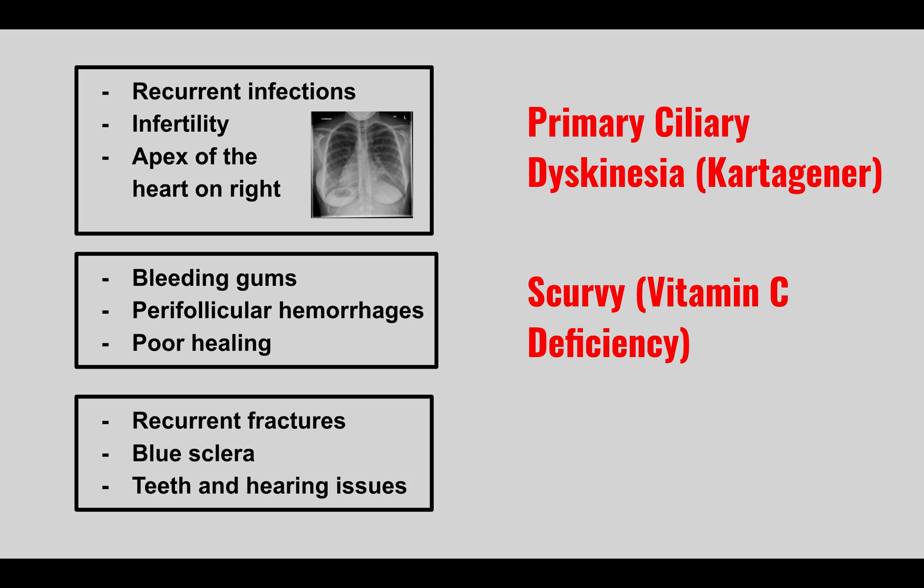The next condition: recurrent fractures, blue sclera, teeth issues, and hearing problems. This is osteogenesis imperfecta — a type 1 collagen defect, which explains all these different findings. The teeth issues can also be called dentinogenesis imperfecta.